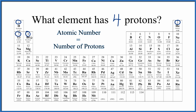So we have four right here. Atomic number is four, and that means we have four protons. So in answer to our question, the element that has four protons is beryllium, element symbol Be.